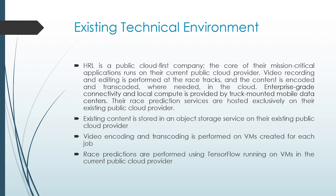Video encoding and transporting is performed on VMs created for each job. Race predictions are performed using TensorFlow running on VMs in the current public cloud provider. Key highlights: core mission-critical applications run on the current public cloud provider, enterprise grid connectivity and local compute is provided by truck-mounted mobile data centers, existing content is stored in an object storage service, and race predictions are performed using TensorFlow on VMs.